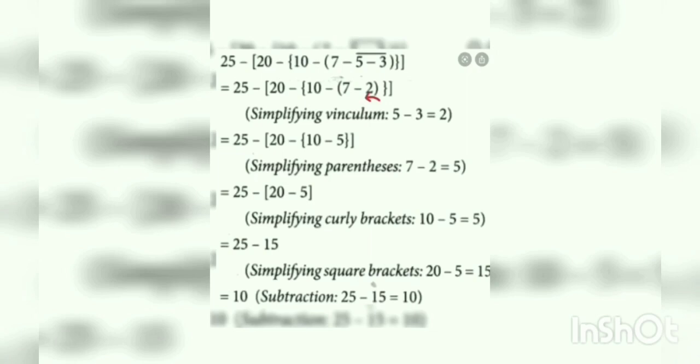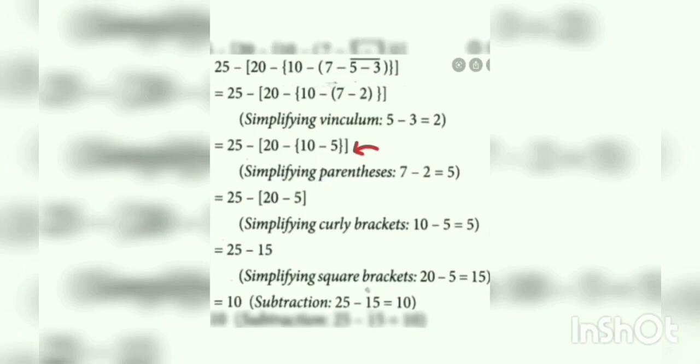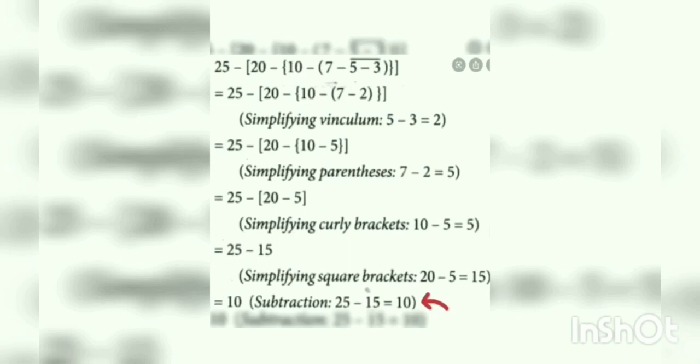During this time we keep all other expressions the same. In the next step, we solve the small bracket which contains 7 minus 2, which equals 5, giving us 20 minus 5 in the square bracket. In the next step, we solve the square bracket: 20 minus 5 gives 15. Then applying subtraction: 25 minus 15 gives you 10.